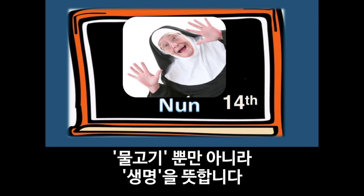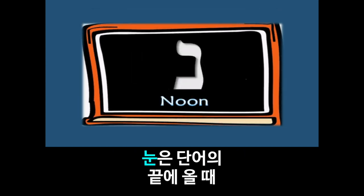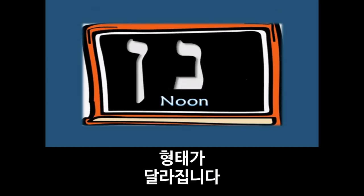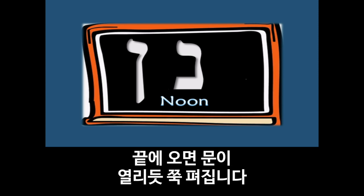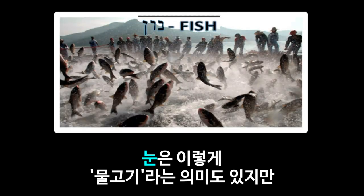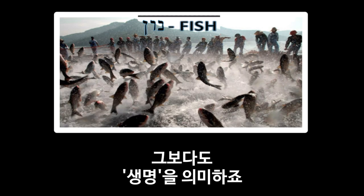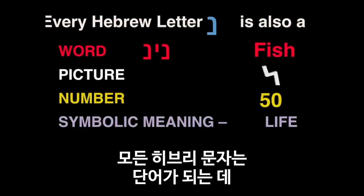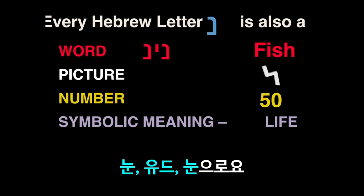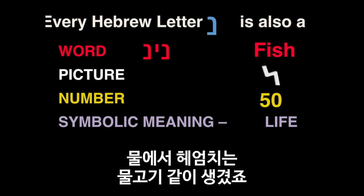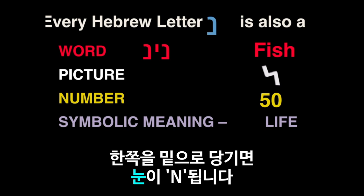Now, it signifies more than just fish — it means life. The Noon has a different form at the end of a word where it changes shape. As you can see, the first one on the right, the bottom drops out like a door or drawer opens up when it is at the end of a word. But Noon represents fish. In the ancient picture language, it was like a fish darting through water. And if you bring one corner down, you can see where we get our letter N from the letter Noon.